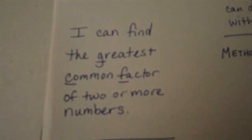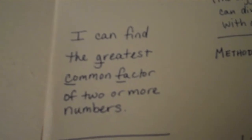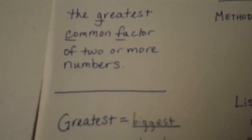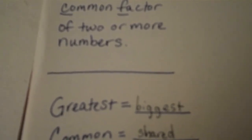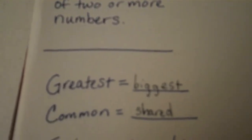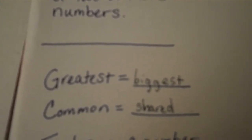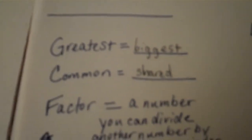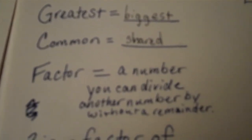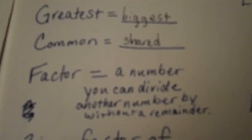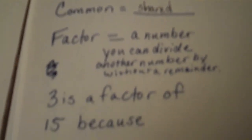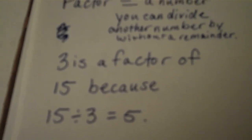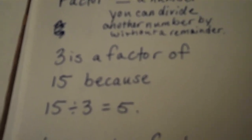Let's start by thinking about what those words mean. Greatest, common, factor. Well, greatest just means biggest or largest. Common means shared, like something two people might have in common. And factor means a number you can divide another number by without a remainder. For example, three is a factor of fifteen because fifteen divided by three equals five — there's no remainder.